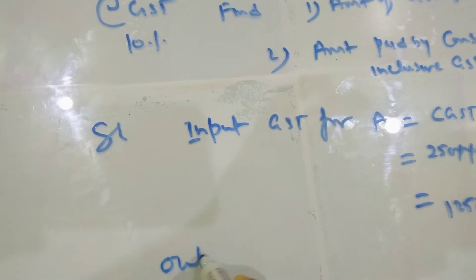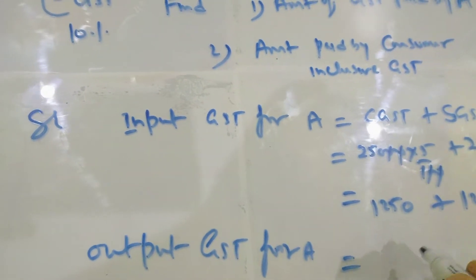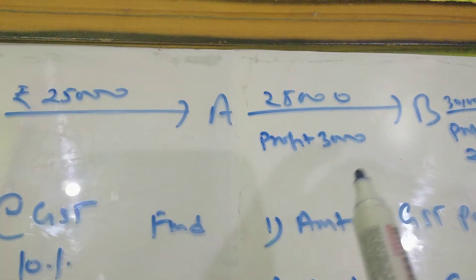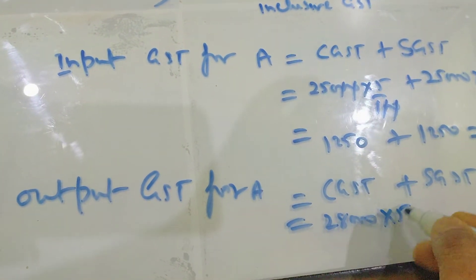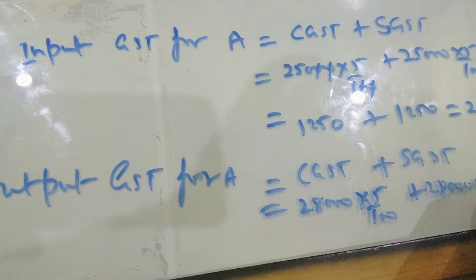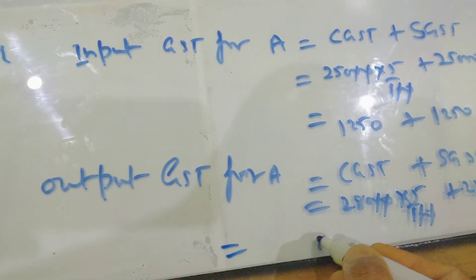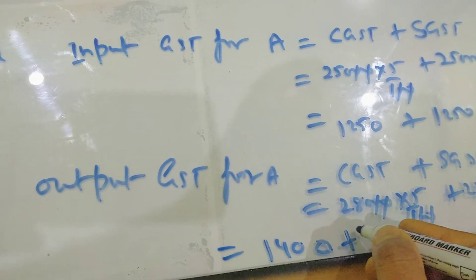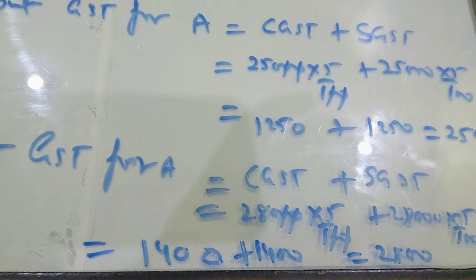Now output GST for A. It is basically CGST plus SGST. Now you see he is selling the article for 28,000. So 28,000 multiply by 5 by 100, and here 28,000 into 5 by 100. Two zeros are cancelled out, so it will give 1,400 and 1,400. So 2,800 is the output GST.